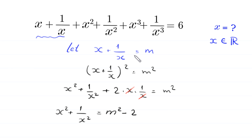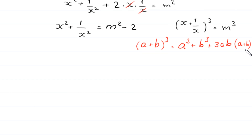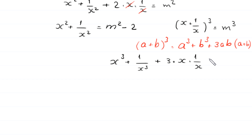Now, if we take the cube of both sides of this equation, then x plus 1 over x, whole cubed, equals m cubed. Using the algebraic identity a plus b whole cubed equals a cubed plus b cubed plus 3ab times a plus b, this becomes x cubed plus 1 over x cubed plus 3 times x times 1 over x times x plus 1 over x, equal to m cubed.